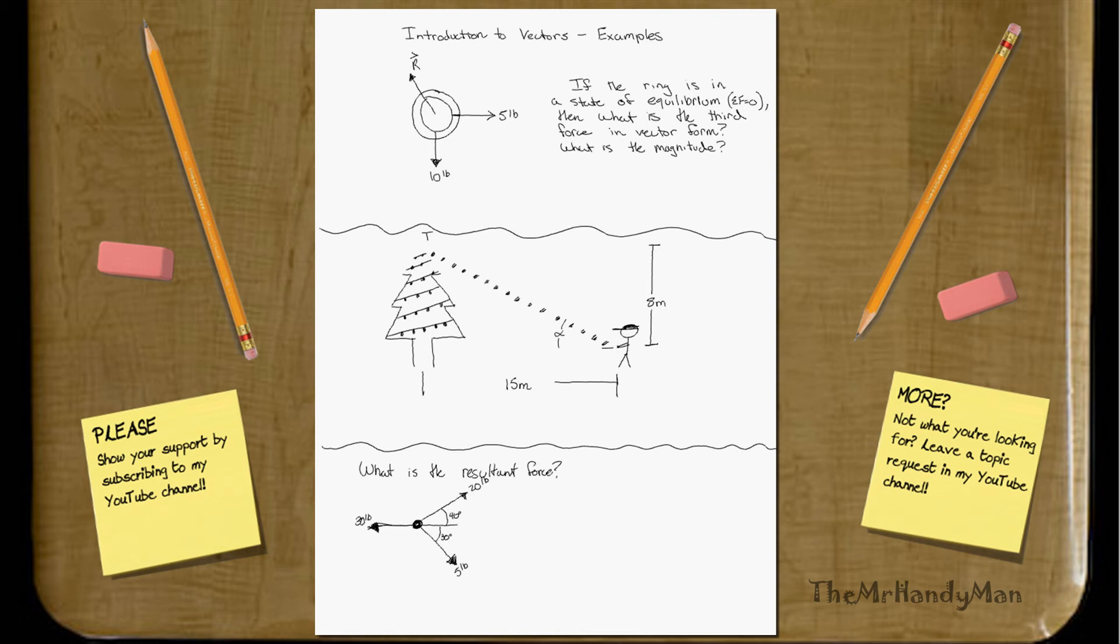Well, what we can do is we can find the resultant force of both this 10 and 5 pounds, and then we can just multiply it by negative 1, so that we know exactly what would counteract those two forces. What I want you to do is realize that we're going to have a force here. This will be negative r, and our resultant force, r, will be there. Now, we don't know the exact angle yet, but I just wanted to show you that it is there.